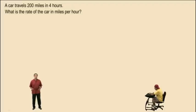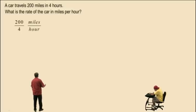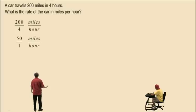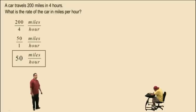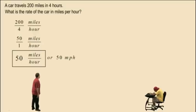A car travels 200 miles in four hours. What is the rate of the car in miles per hour? We are being asked for a rate in miles per hour, which means miles go in the numerator and hours go in the denominator. So we write 200 over 4. To reduce that fraction we divide out the common factor of 4, giving us 50 over 1, which is 50. So our answer is 50 miles per hour — that means 50 miles per one hour. We often write this as 50 mph.